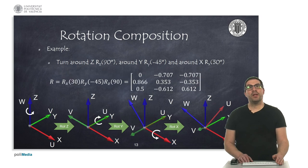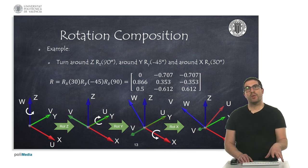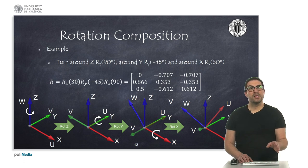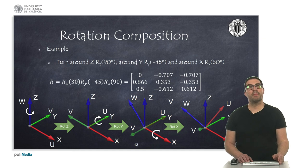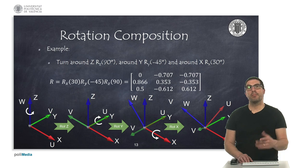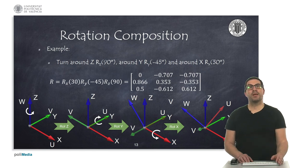On the other hand, if we apply the same rotations but in reverse order — first around z, then around y, and finally around x — we can see that the resulting orientation is different. Because matrix multiplication is non-commutative and does not satisfy the commutative property, the final orientation is completely different. This makes it very important to know the order of operations whenever we apply a rotation composition.